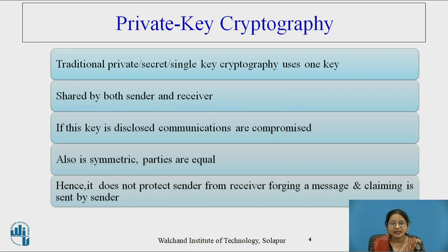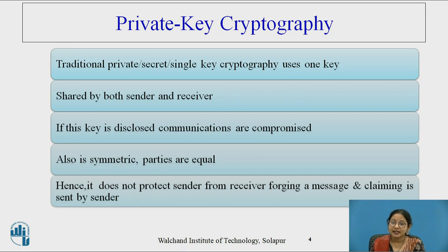If that particular key is disclosed, the communication can be compromised. It is also called as symmetric because the parties are equal, and it does not protect the sender from the receiver forging a message and claiming it was sent by the sender. That forging of a message cannot be protected.